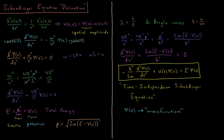Now, how to relate momentum to wavelength: according to the de Broglie hypothesis, λ = h/p. So 4π²/λ² becomes 4π²p²/h². Since ħ = h/2π, we have ħ² = h²/4π², so 4π²/h² = 1/ħ². Therefore 4π²/λ² = p²/ħ², and substituting p² = 2m(E − V), we get 4π²/λ² = 2m(E − V)/ħ².